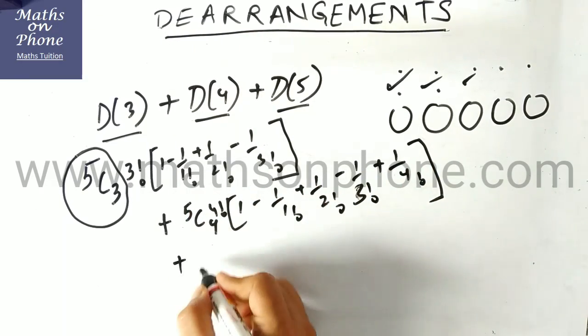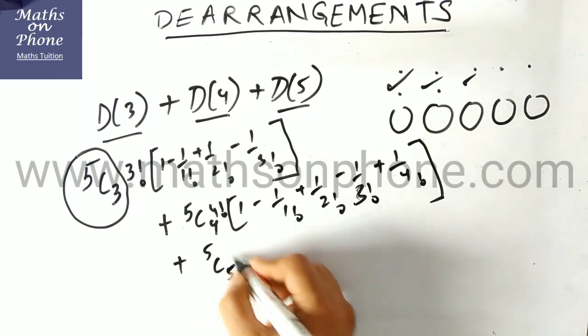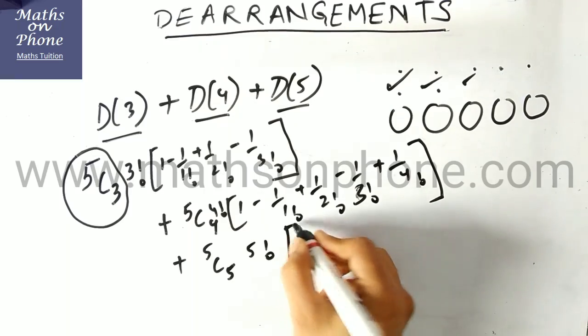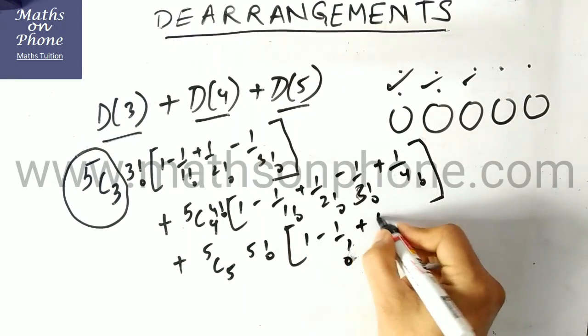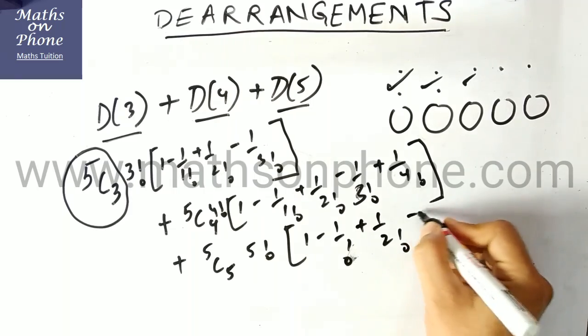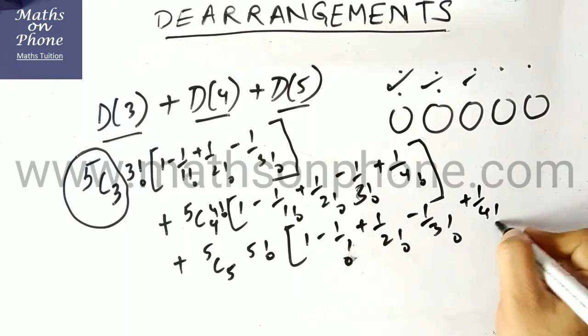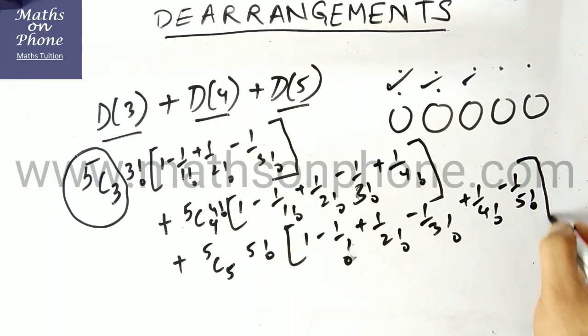Now derangement of the 5 things will be 5C5. What is this? Can you tell me? This is just 1. 5 factorial [1 minus 1 by 1 factorial plus 1 by 2 factorial minus 1 by 3 factorial plus 1 by 4 factorial minus 1 by 5 factorial]. So we have to stop here.